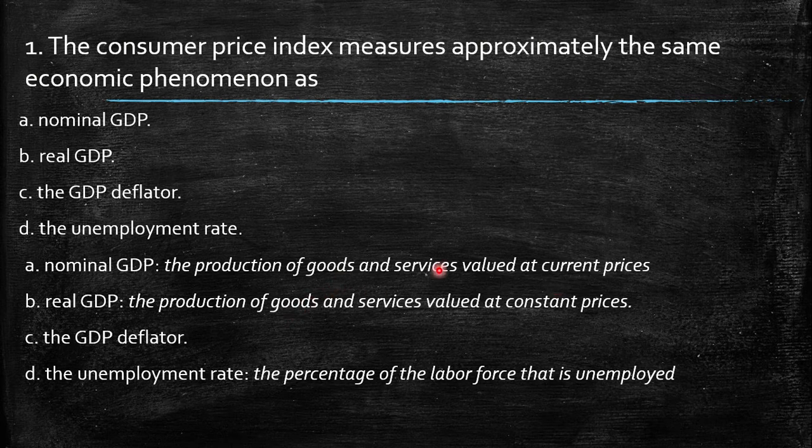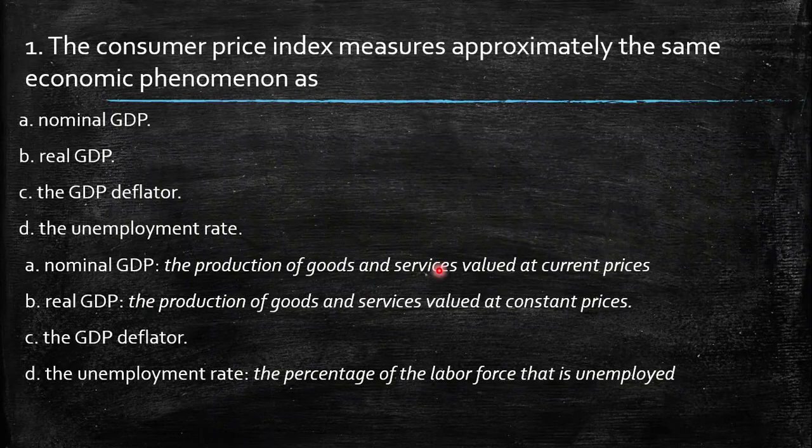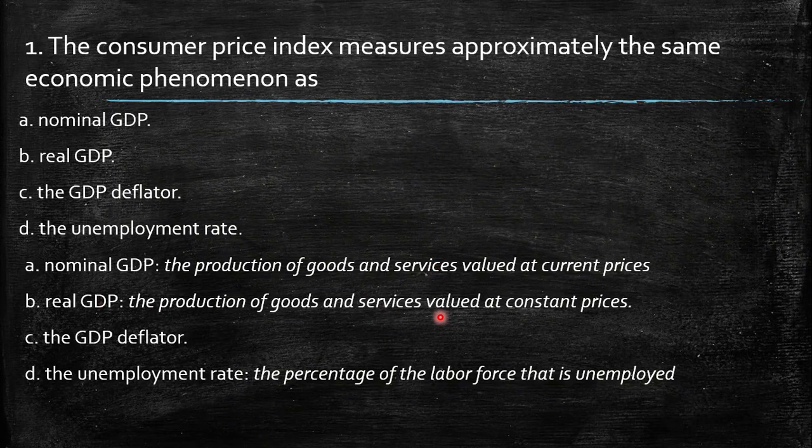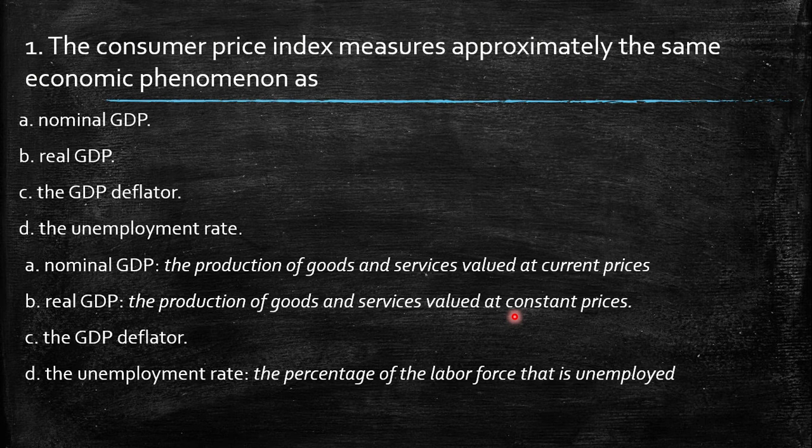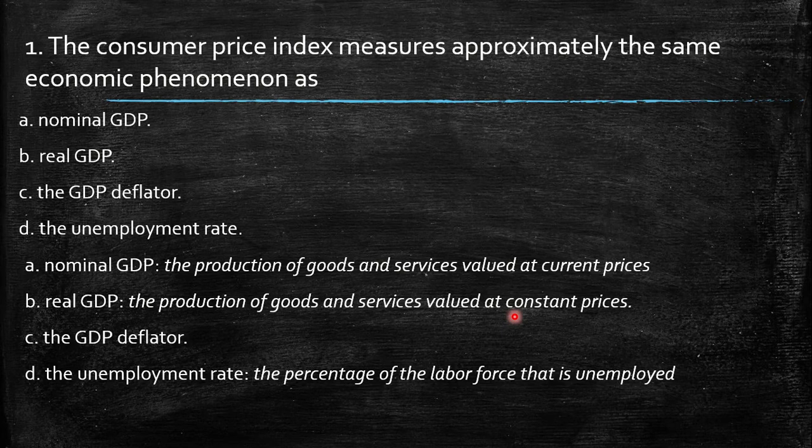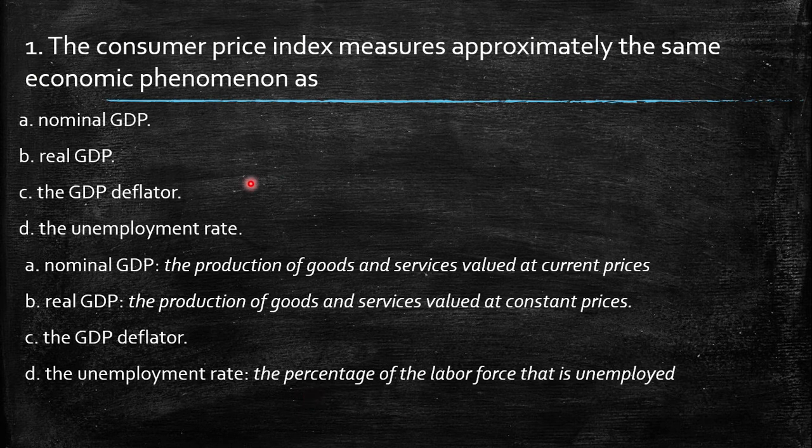The real GDP is exactly the same, just valued at constant prices. It means a base year. So you're going to value all the goods and services produced by a certain base year. And the unemployment rate is the percentage of the labor force that is unemployed.